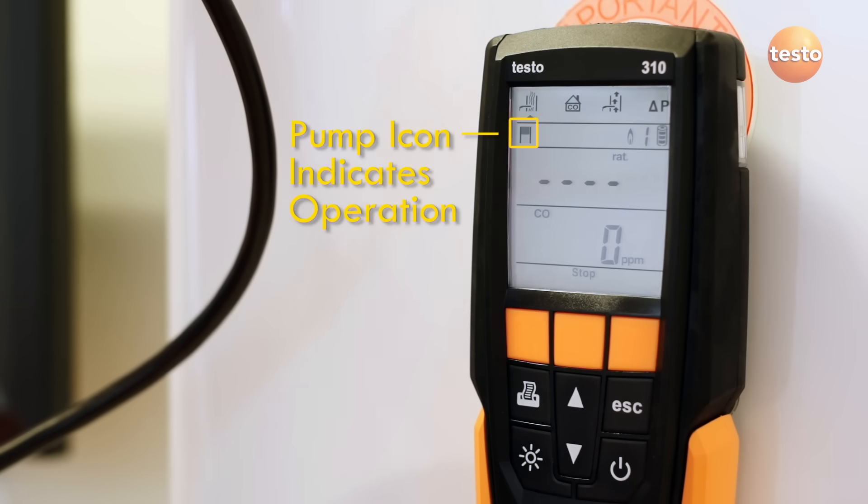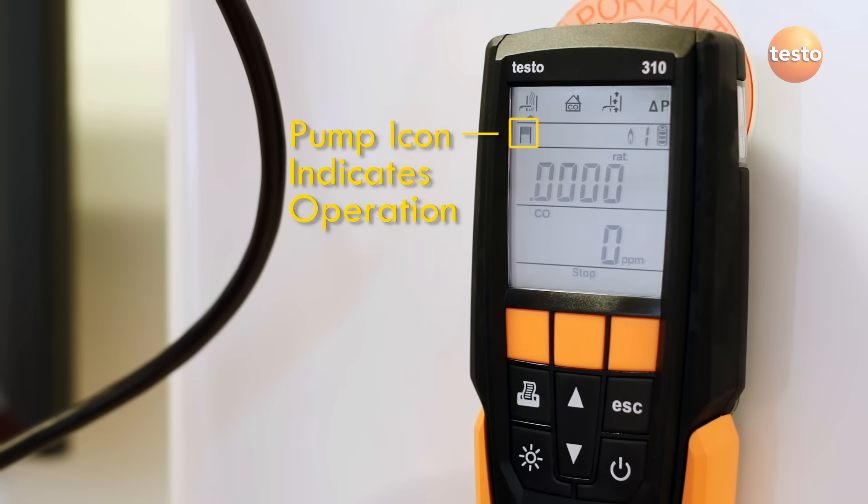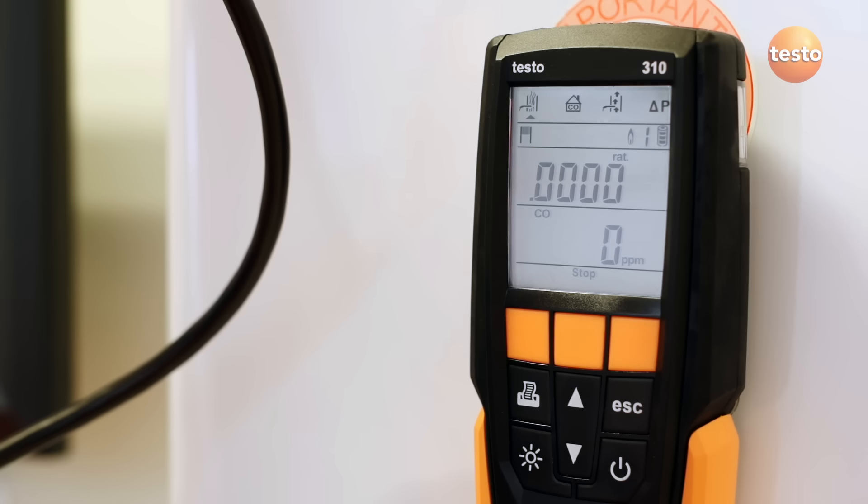The pump starts running, indicated by the icon at the top left of the display. The analyzer is now measuring the flue gases. The display shows ratio and carbon monoxide.